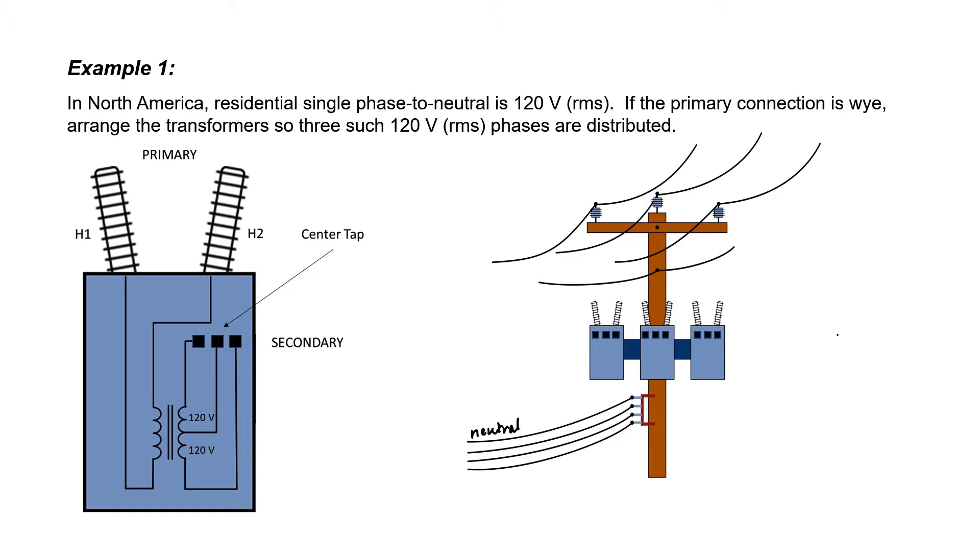Usually on the secondary side, the top wire will be neutral. We've been told in the problem that the primary connection is Y, so let's go ahead and draw those connections in for the primary side.